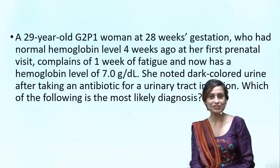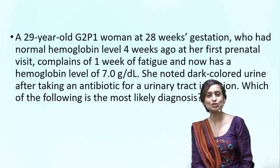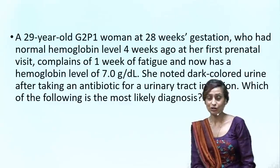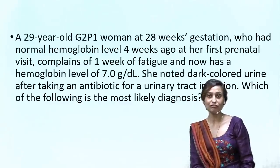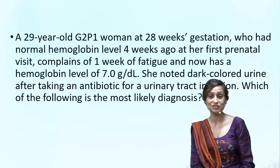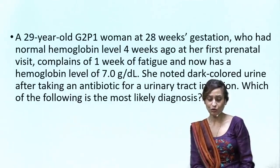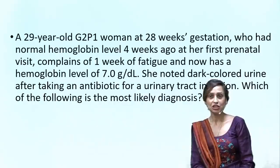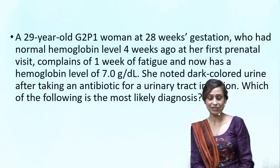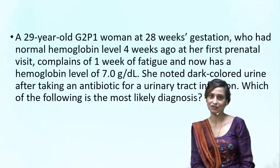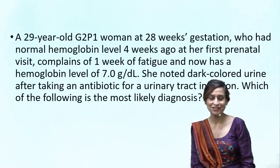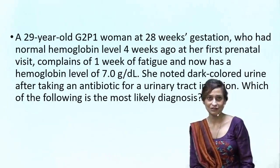So let's look at this question. This is a 29-year-old G2P1 who presents to us at 28 weeks. She had a normal hemoglobin level four weeks ago at her first prenatal visit. For the past one week she's complaining of fatigue, and when her hemoglobin was checked it turned out to be 7 gram percent. She noted dark colored urine after taking an antibiotic for a urinary tract infection. Which of the following is the most likely diagnosis?